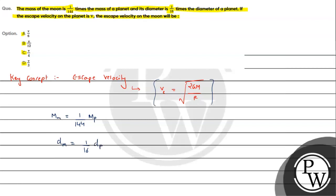So let's denote mass of moon Mm equals M by 144 times capital M of the planet, and radius of moon rm equals 1 by 16 times r of planet.